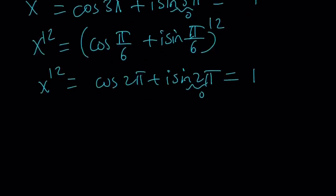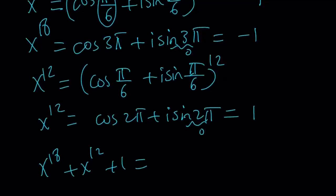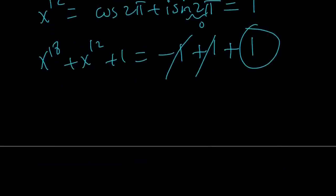Therefore, we get the following. x to the 18th power plus x to the power 12 plus 1. x to the 18th power is equal to negative 1, x to the power 12 is positive 1, and positive 1 is positive 1. All the time, the answer is 1. Let's go ahead and take a look at the second method.